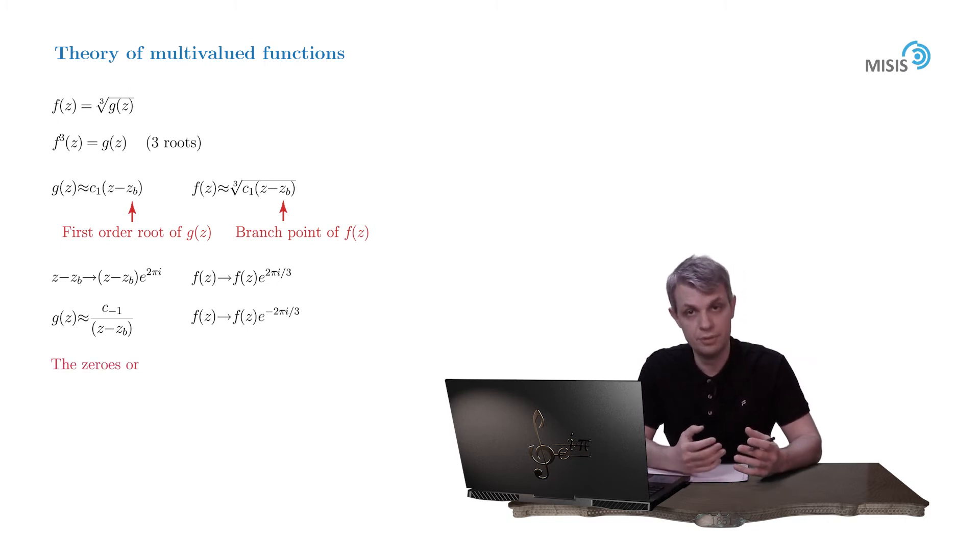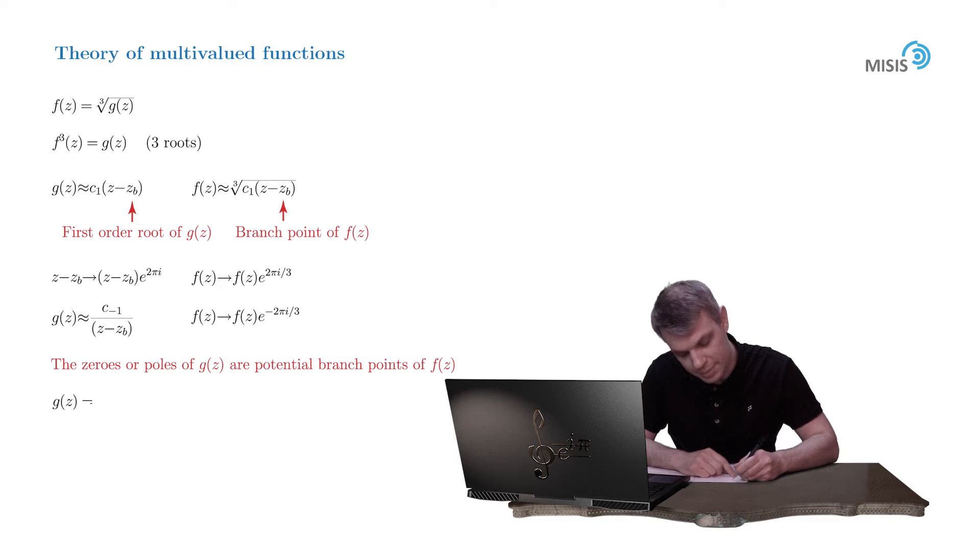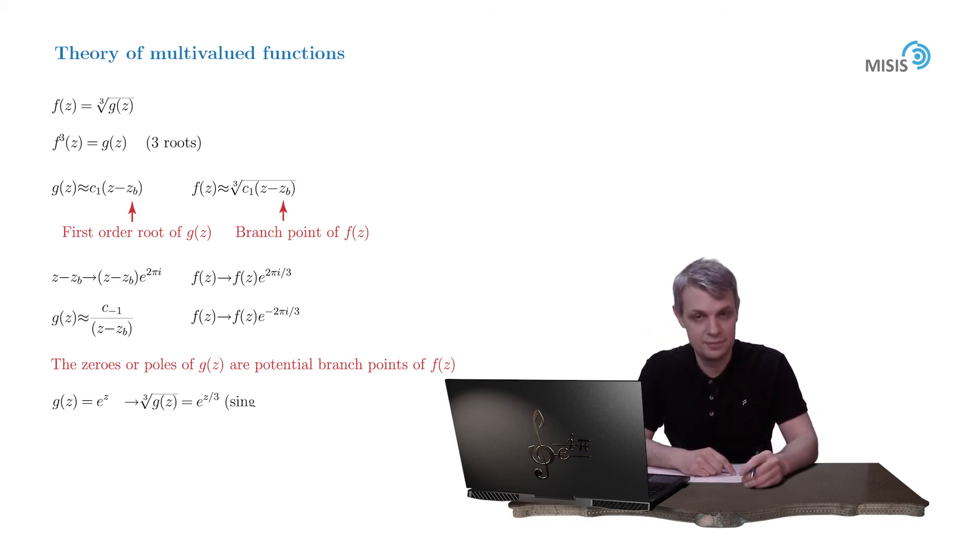Therefore, the potential branch points of our root type functions are either zeros or poles of the function under the root. If a function under the root doesn't have zeros or poles, then the function will be single valued. The classical example would be an exponential function. Indeed, let g of z be a simple exponential e to the power of z. We remember that exponential doesn't have zeros and poles in the complex plane. But then the cubic root would be simply e to the power of z by 3, so it's again a single valued function.